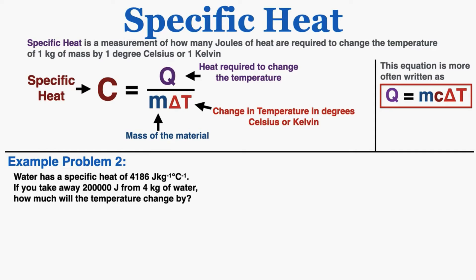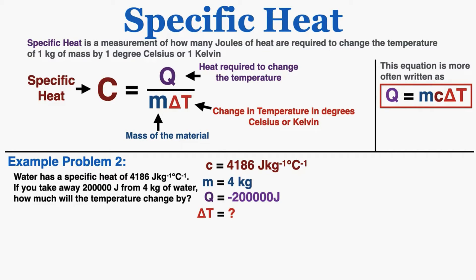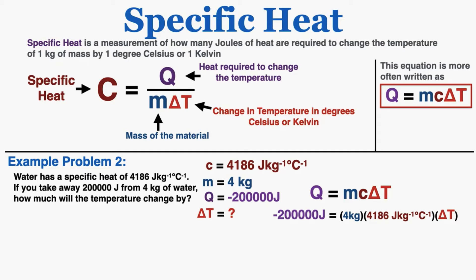In example number two, we're using water again, but this time we're taking away 200,000 joules from 4 kilograms of water, and we want to know how much the temperature will change by. Because we're taking heat energy out, this is going to cool the water and decrease the temperature. I know the specific heat, the mass, and the change in energy — that's negative 200,000 joules. Solving for the change in temperature using Q equals MC delta T gives a final answer of negative 11.9 degrees Celsius.